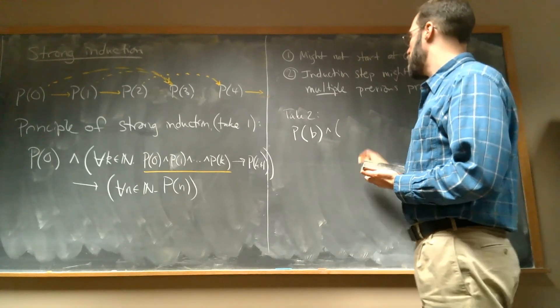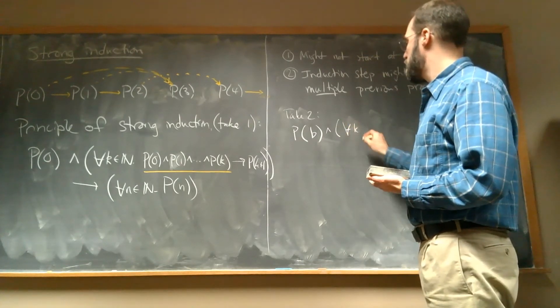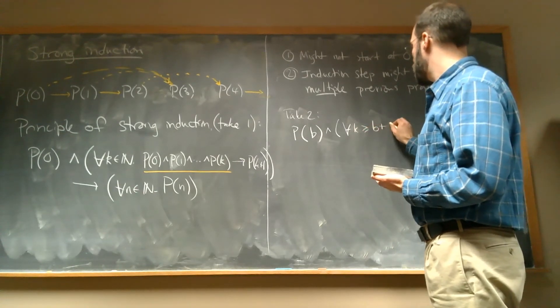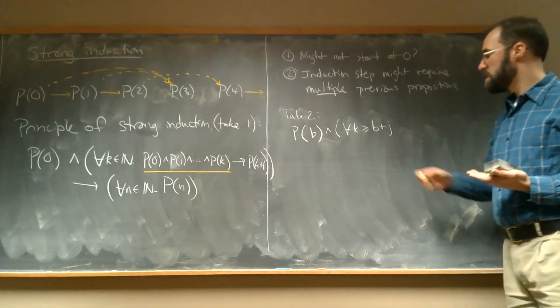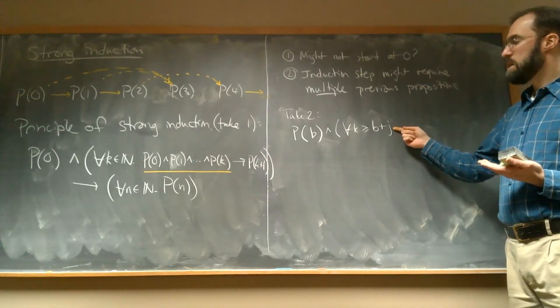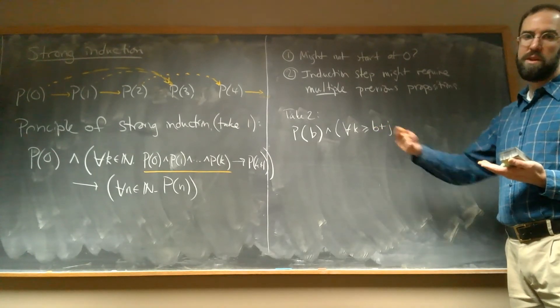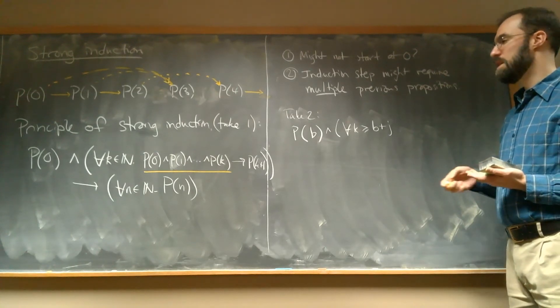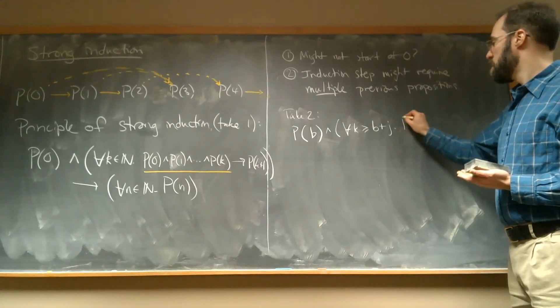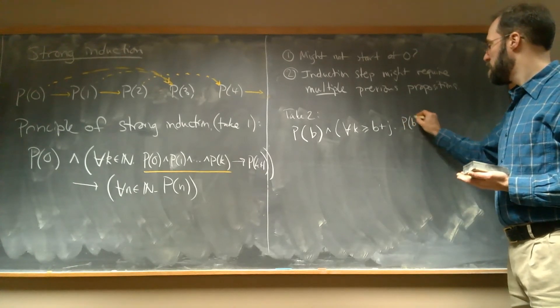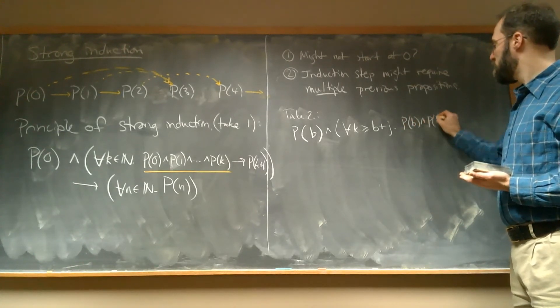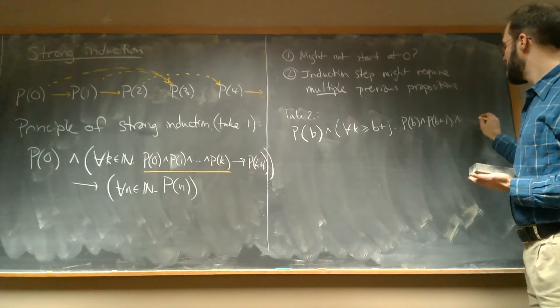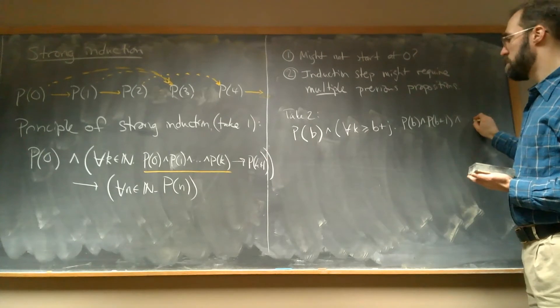And we're going to say for all K greater than or equal to B plus J. So J is going to be how many cases we actually need in order to get our induction step off the ground. So we're going to assume P(B) and P(B+1) and dot dot dot all the way up to, I'm going to run out of space here.